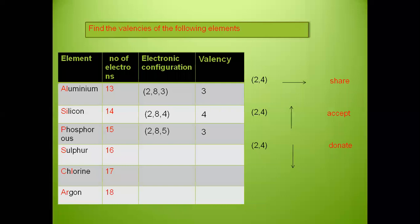For sulfur, the configuration is 2,8,6, so the valency is 2. For chlorine, 2,8,7, the valency becomes 1. For argon, 2,8,8, the valency is 0.